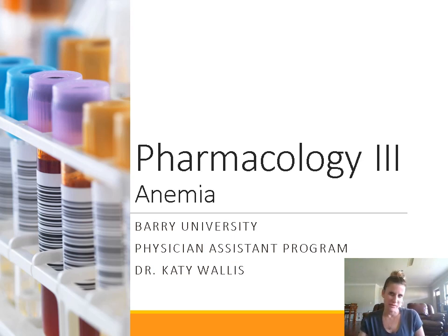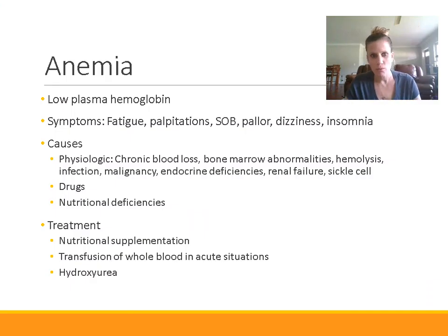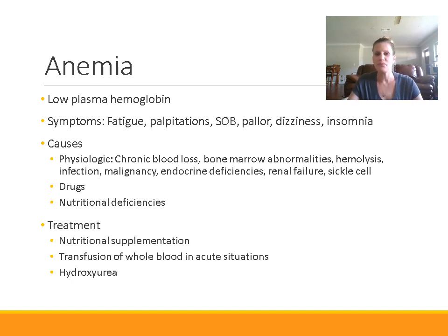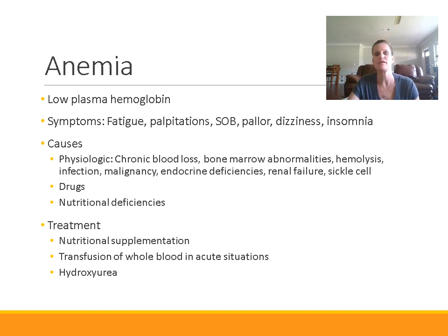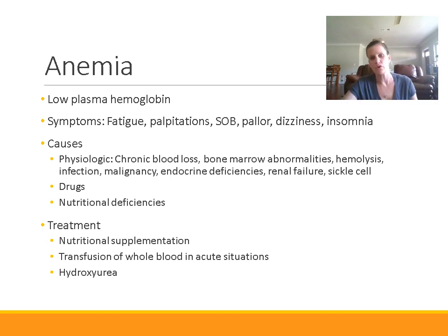Hi guys, today we'll talk about anemia and the different drugs that we use to treat anemia. Anemia is defined as low plasma hemoglobin. Low hemoglobin can result from decreased red blood cells — this is probably most common. People frequently think that anemia is low iron, because that's commonly how we treat it, by giving patients iron. But the definition of anemia is not low iron. Anemia is low plasma hemoglobin, commonly because of decreased red blood cells or low total hemoglobin per unit volume of blood.